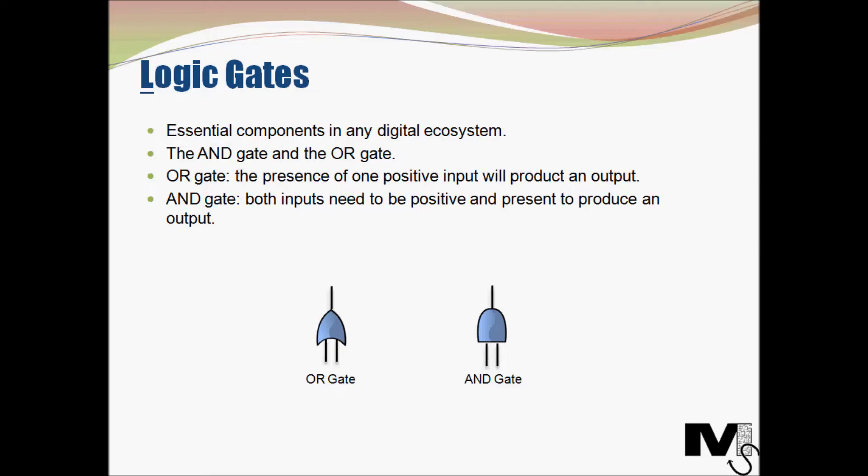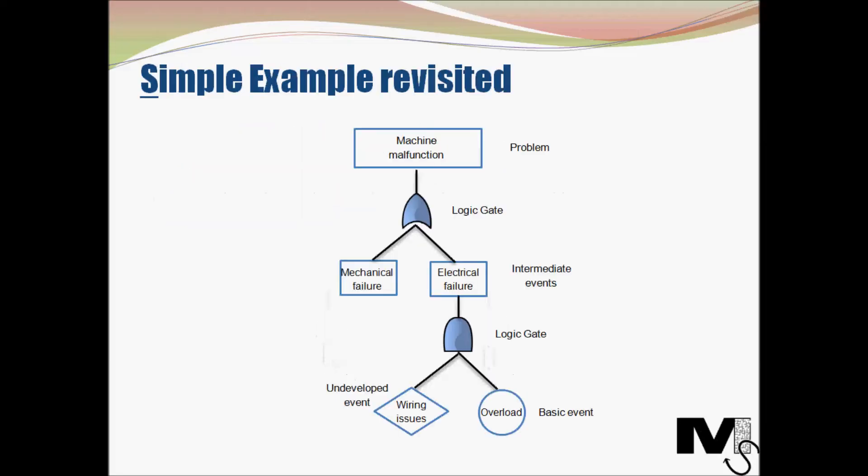The two most common types of logic gates used in FTA are the AND gate and the OR gate. Both gates will have two inputs and one output. In an OR gate the presence of one positive input will produce an output, and in an AND gate both inputs need to be positive to produce a positive output. Now let's see events and logic gates using our simple example that we've previously looked at. We'll go back to that example and populate it.